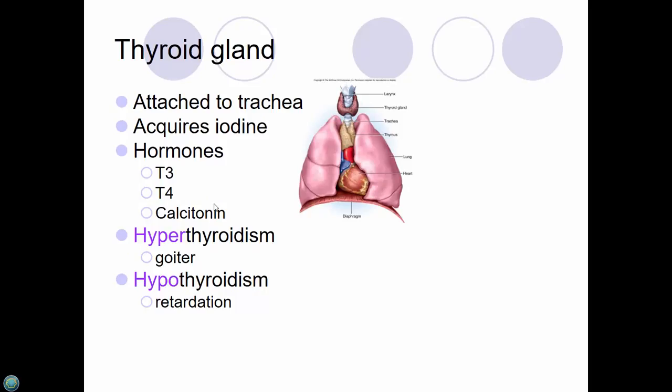The thyroid gland is attached to the trachea, underneath the thyroid cartilage at the laryngeal prominence. The thymus gland helps T cells mature as part of your immune system and keeps shrinking as you age. The thyroid gland requires iodine to function. It's becoming a problem again in the United States — in the early 20th century there was a problem with people not getting enough iodine, causing goiters.